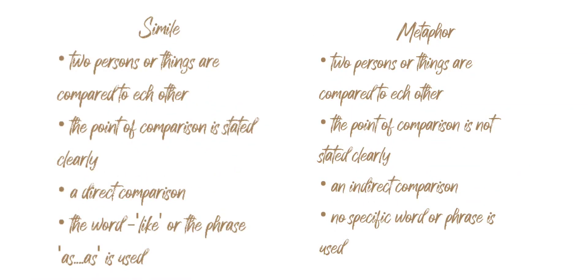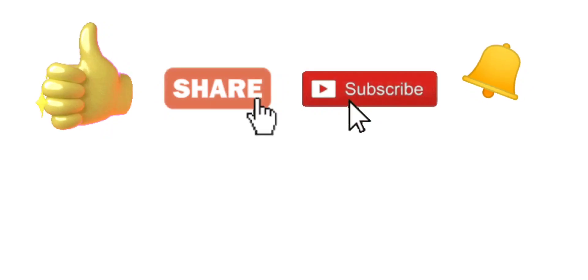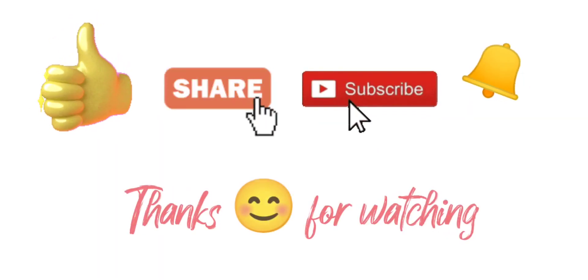So, we see in metaphor, two persons or things are compared to each other, but the point of comparison is not stated clearly anywhere. So it's an indirect comparison, and no specific word or phrase is used. Hope this video has been helpful to everybody. If you still have any doubt, please let me know in the comment section. Don't forget to like, share, subscribe, and hit the bell icon. Thanks for watching.